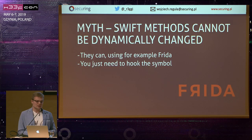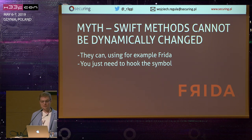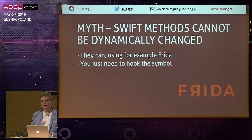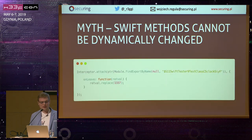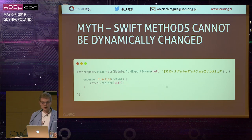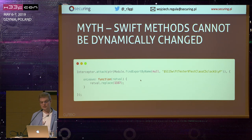Another myth in Swift is that Swift methods cannot be dynamically changed. That's not true because we can use Frida and just hook its symbol. For those not familiar with Frida, it's a dynamic instrumentation toolkit for developers. We create a script like this: attach to the program, find the export by name, pass the symbol, and whenever our clock returns a value, we just replace it with a different value. So it's demo time — I'll show you how it works.